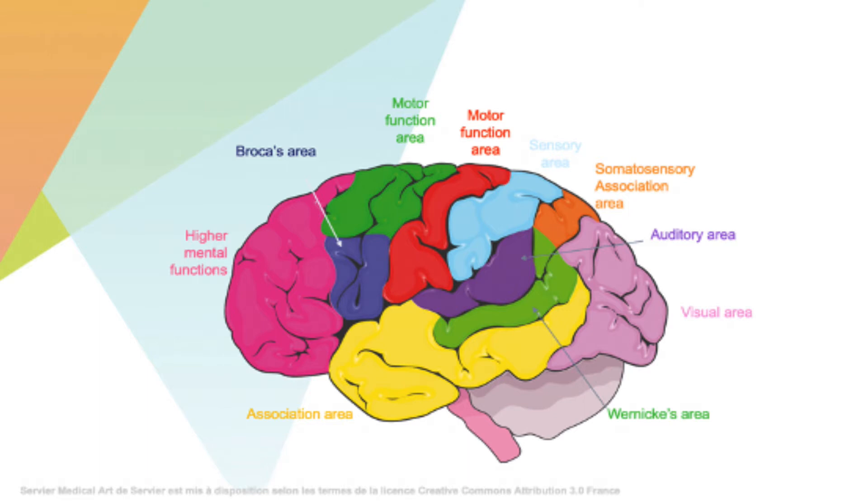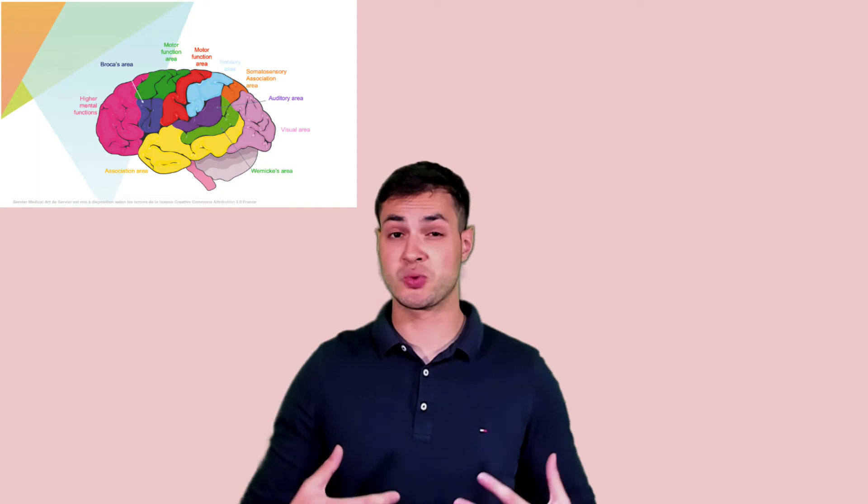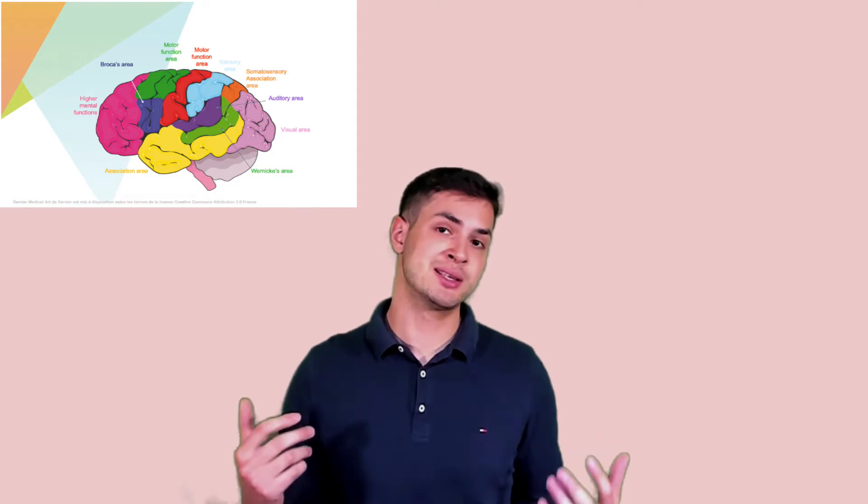So these patients, because they have a normal functioning Broca's area, they can speak fluently, they can speak on and on and on. But they actually don't understand or they'll speak rubbish to you because they don't understand what's going on because Wernicke's area is actually affected. This is what you need to know.